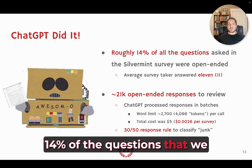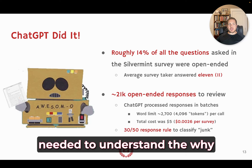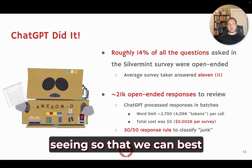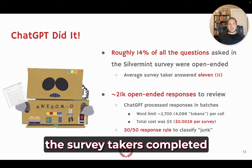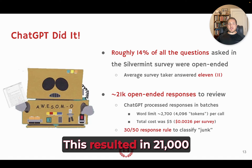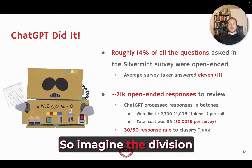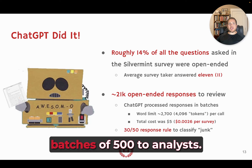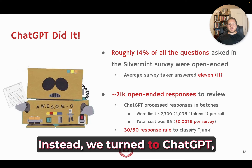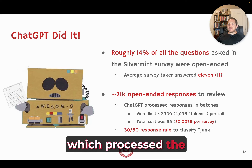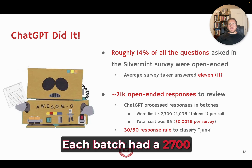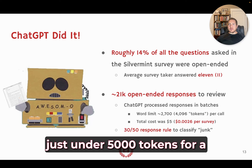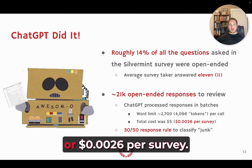14% of the questions on this survey were open-ended, because we needed to understand the 'why' behind the patterns to best inform the simulation modeling for each agent. On average, survey takers completed 11 open-ended fields, resulting in 21,000 open-ended responses. Instead of dividing those into batches for analysts, we turned to ChatGPT, which processed the text in batches — each response processed individually with prompts, each batch with a 2,700 word limit, just under 5,000 tokens.